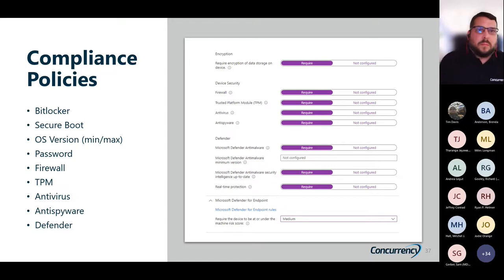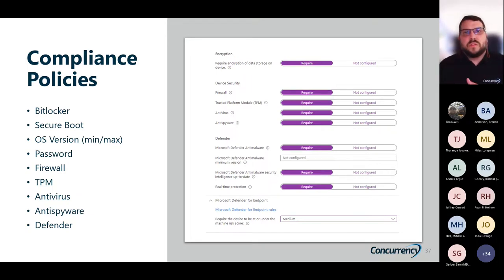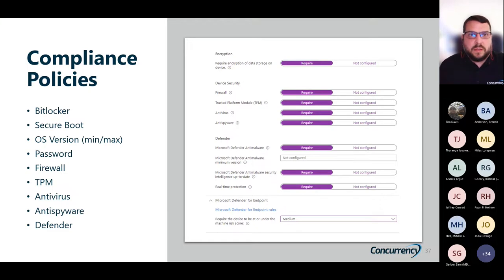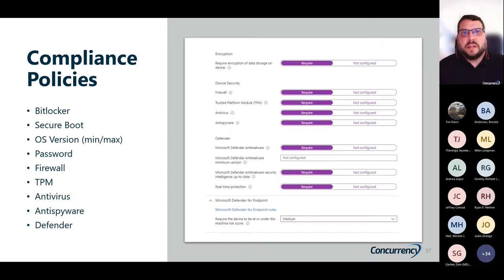We can also set up compliance policies, which define the rules and settings that users must meet in order to be compliant. We can use those compliance policies with conditional access to make sure the device is compliant before you get access to any information. These can include requirements like encryption, firewall enabled, Defender real-time protection enabled, and what the Microsoft Defender for Endpoint risk score must be before we allow anyone to have access to that information.